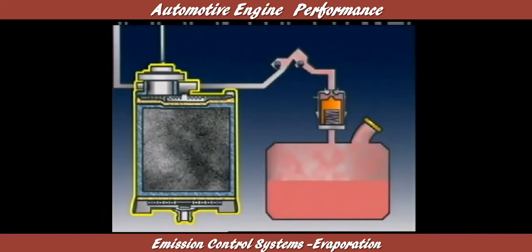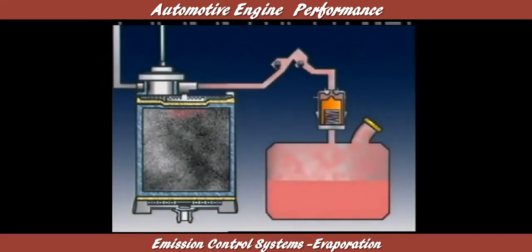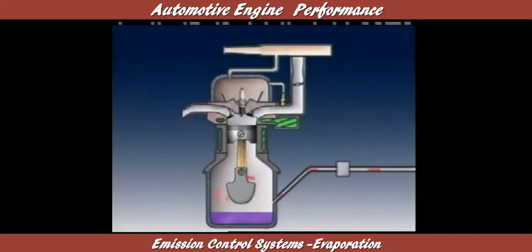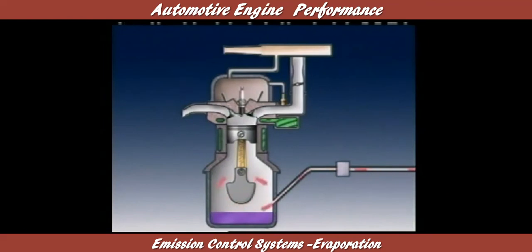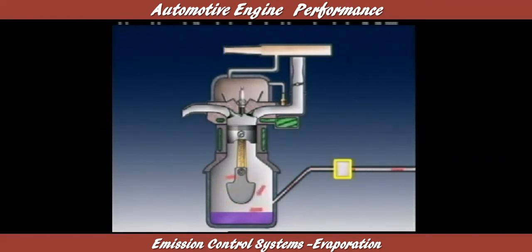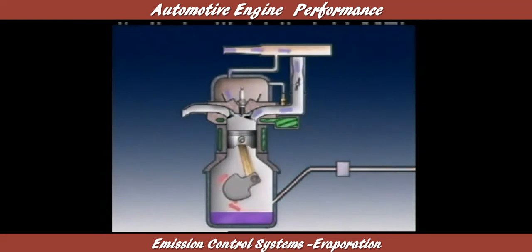A storage device is used to store the fuel vapors, and the fuel tank breathes through this storage device. Some vehicles use the engine crankcase. When the temperature of the fuel in the tank increases, fuel vapors are forced along the vent line past a liquid check valve and into the crankcase.